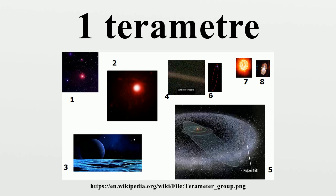5.7 terameters, 38.1 astronomical units — perihelion distance of Pluto. 7.5 terameters, 50.1 astronomical units — outer radius of the Kuiper Belt, inner boundary of the Oort Cloud.